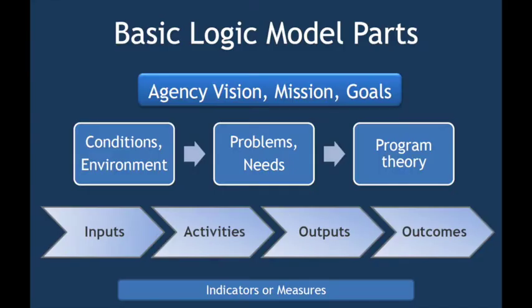What is in a logic model? This is the basic logic model components. It allows the agency to envision its mission and goals, describes the conditions, conducts an environmental scan to define problems and needs, and understand the program theory. It describes the inputs, the outputs, and the outcomes. The beginning of a logic model defines the problem or resources the agency has, and what the problem or resources define as the inputs. From these inputs, what activities can be led to? What are the goals and outputs from these activities? And from these outputs, what are the overall outcome measures and impact — short-term, middle-term, and long-term? Using this logic model, you can then conduct an evaluation of the outcomes and the process.